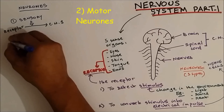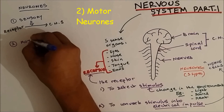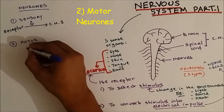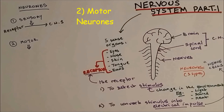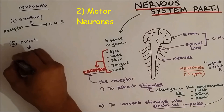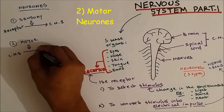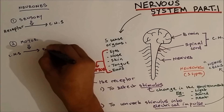The second neuron is the motor neuron. The motor neuron carries electrical impulse from the CNS to the effector.